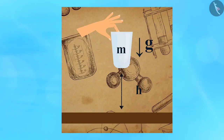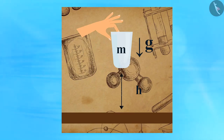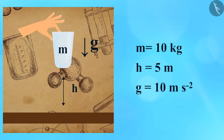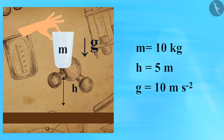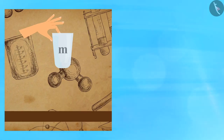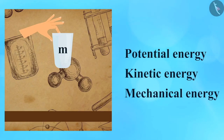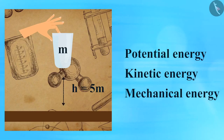Let us find out the kinetic energy, potential energy, and total mechanical energy of an object at two different heights. Suppose an object of mass 10 kg is dropped from a height of 5 meters, with acceleration due to gravity equal to 10 m/s². Let us calculate the potential energy, kinetic energy, and total mechanical energy of the object when the height H is equal to 5 meters.